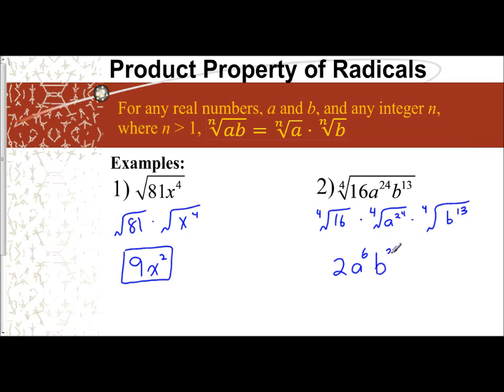So b cubed comes outside. Well, how many remain inside? Well, 4 times 3 give you 12, you want 13, so there's one more b remaining inside, b to the first power. So my final answer is 2a to the 6th b cubed times the fourth root of b.